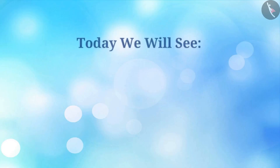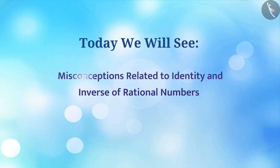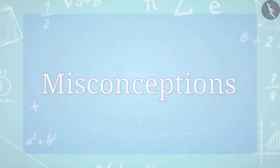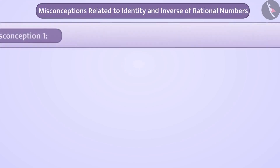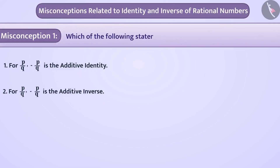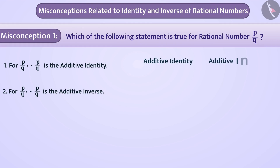Today we will see some misconceptions related to identity and inverse of rational numbers. Misconception 1: Which of the following statements is true for rational number p/q? Students often confuse between additive identity and additive inverse.